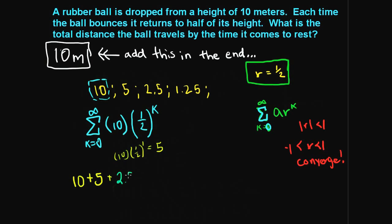If k is 2, 10 times 1/2 squared - 1/2 squared is 1/4, 10 times 1/4 is 2.5. If k was 3, 1/2 cubed is 1/8, 10 times 1/8 is 1.25. And all of these numbers will continue to add. Is this identical to the series we're dealing with? Yes. So this is what we want to use.